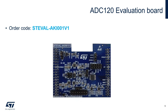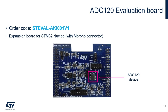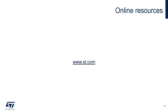This is a picture of the ADC120 evaluation board, named STEVAL-AKI001V1. This board has been designed as an expansion board to be connected to an STM32 Nucleo board, so it has Morpho connectors on the left and right side. The connector to hook up the analog inputs is located at the bottom. For online resources, let's check what is available on ST.com.